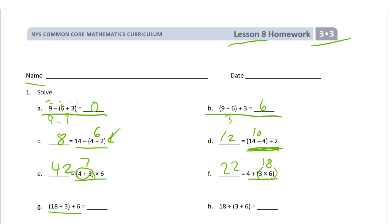18 divided by 3 plus 6. And 18 divided by 3 plus 6. But here you do the 18 divided by 3 first. That's 6. So you're looking at 6 plus 6, which is 12. And here you do the 3 plus 6 first. 3 plus 6 is 9. So you're looking at 18 divided by 9, which is 2.